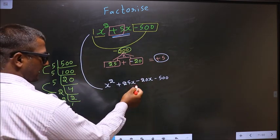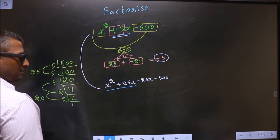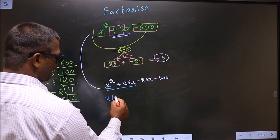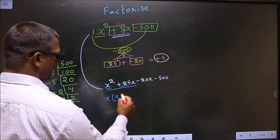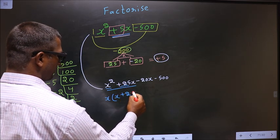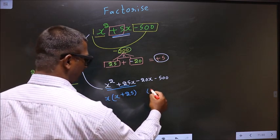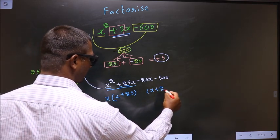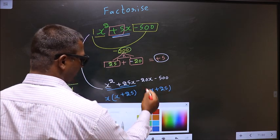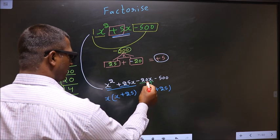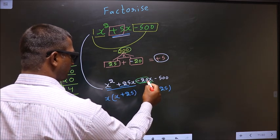What can be taken out common from these 2 terms is x. So here you are left out with x, and here you are left out with plus 25. Whatever you have got here, here also you should get the same thing. Now from this, x has gone inside, so outside you are left with minus 20.